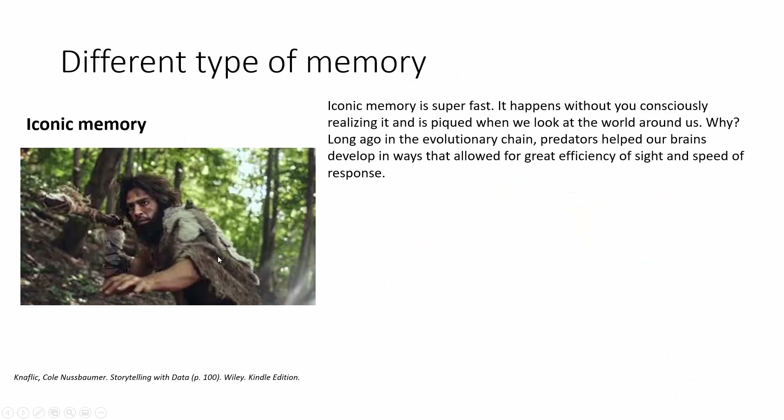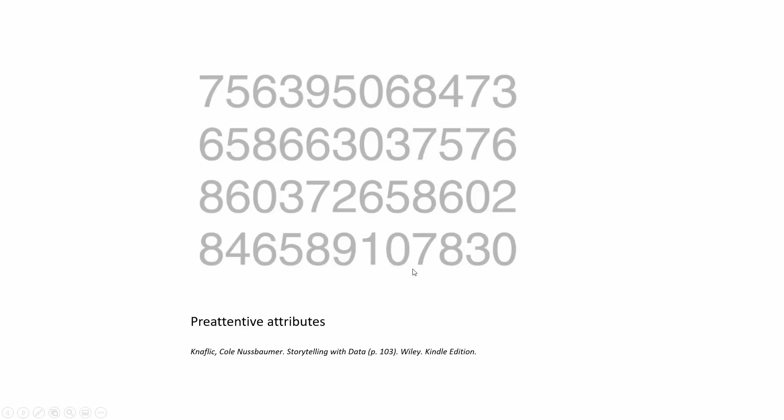The interesting discussion today from the book is about iconic memory. Iconic memory is related to when we respond and react very fast — we can check something and grab a number from a bunch of numbers. This comes from our ancestors going for hunting, so they needed to react and respond very fast, which allows us to have great sight and speed of response to what happens around us.